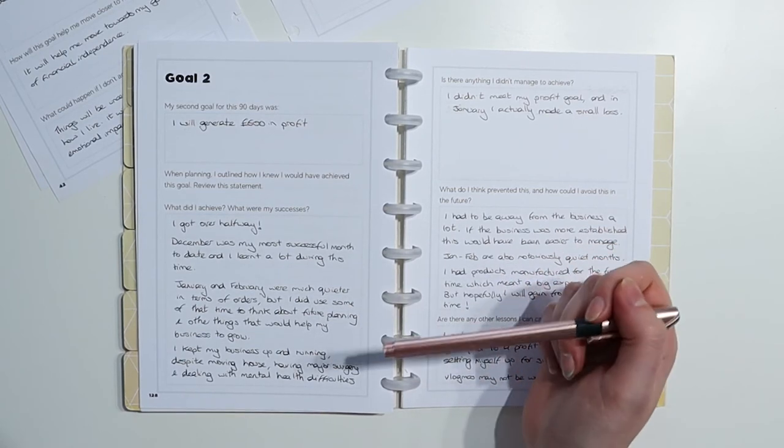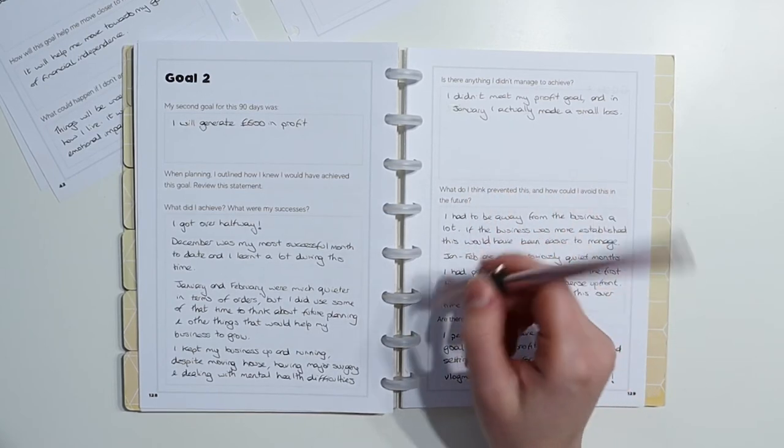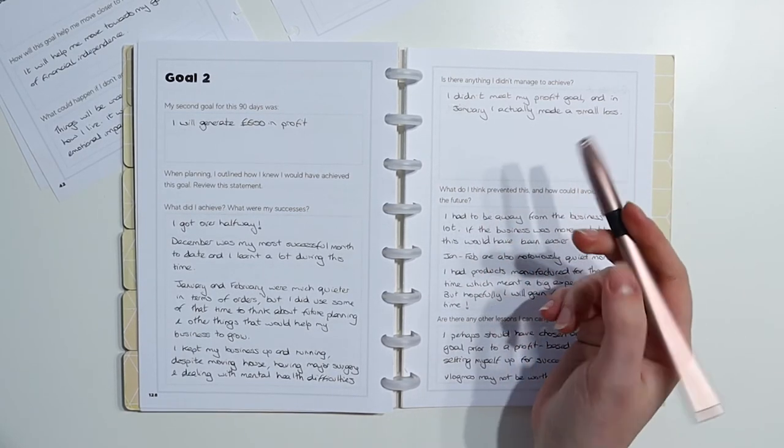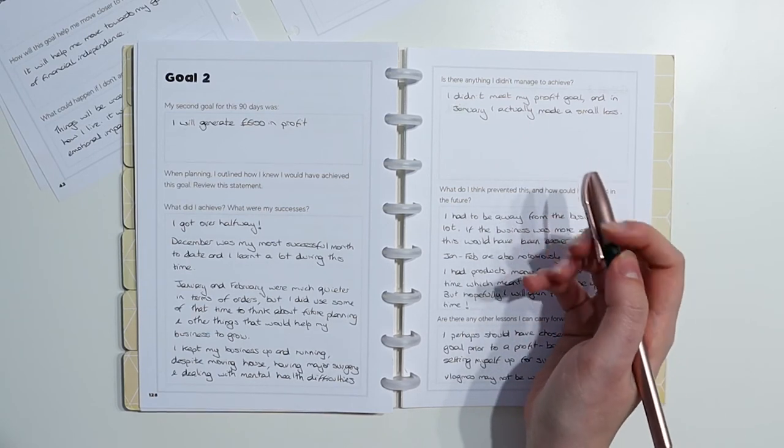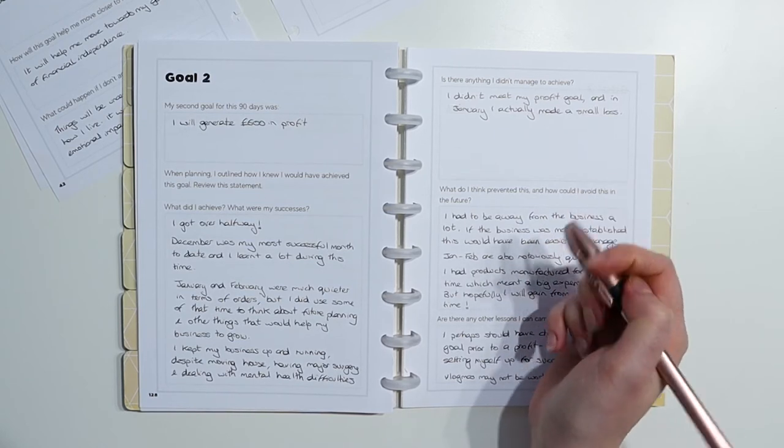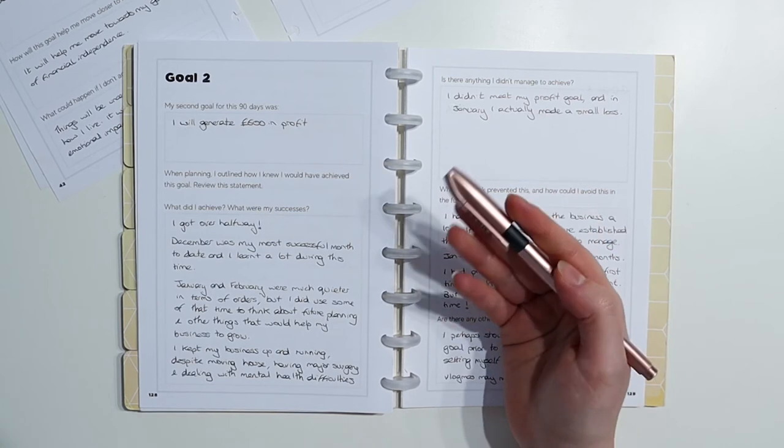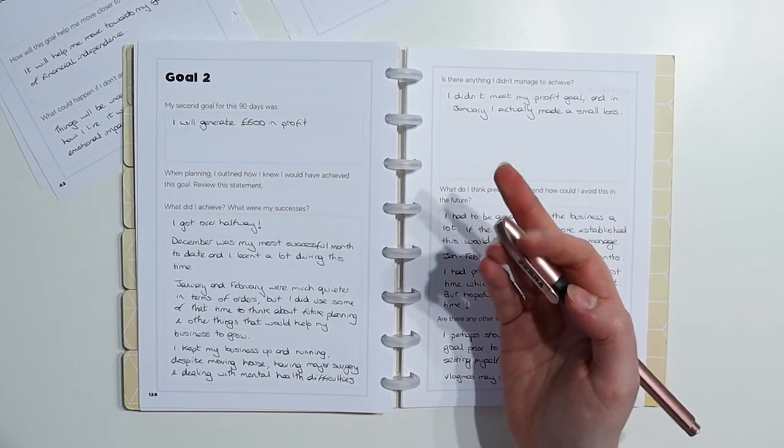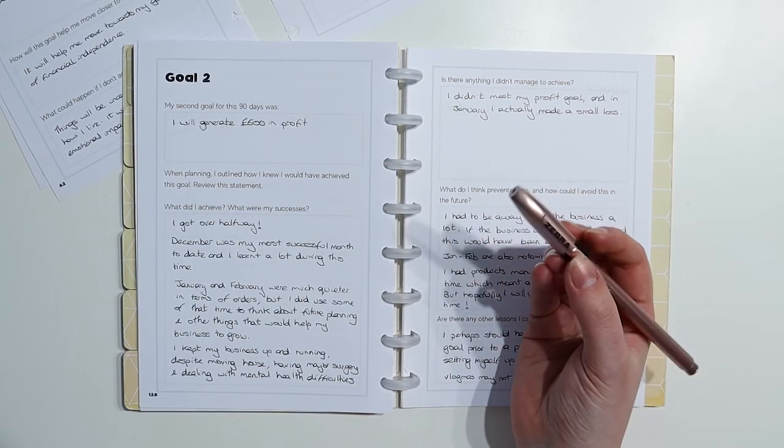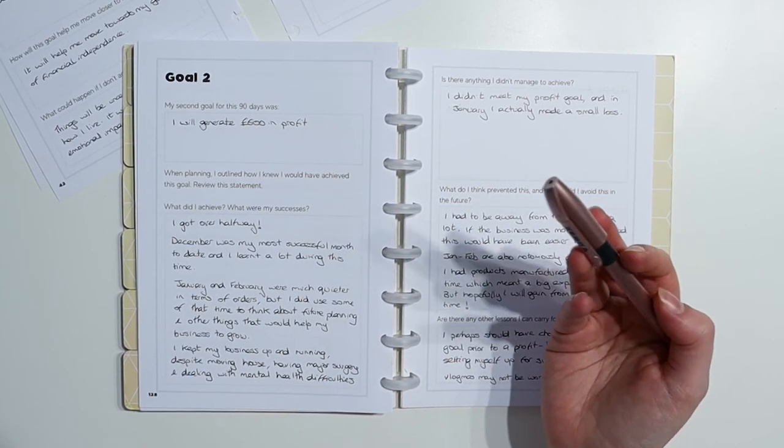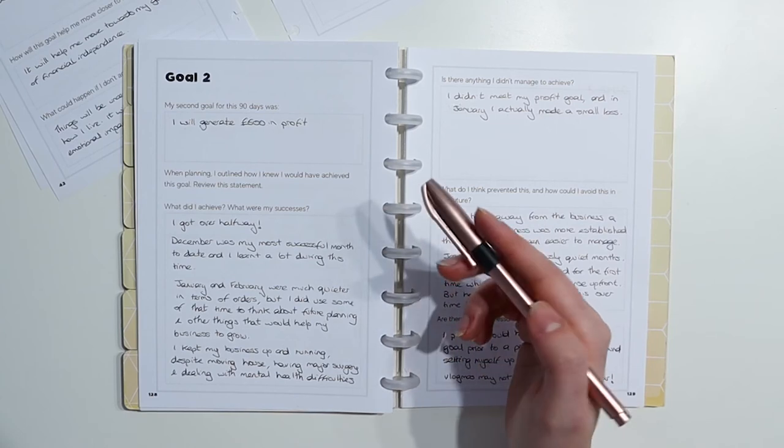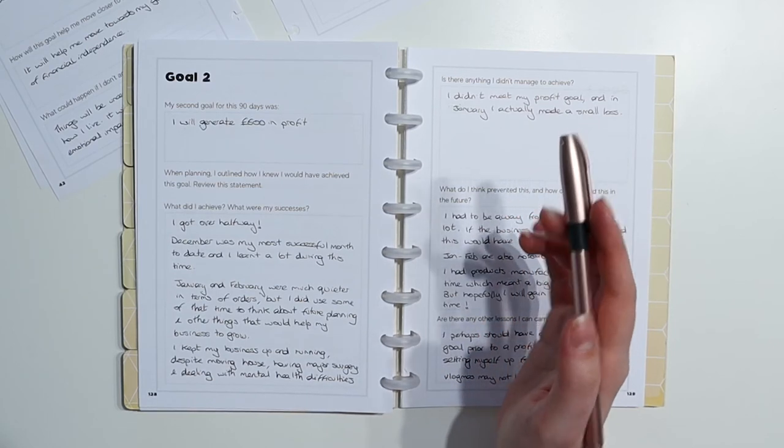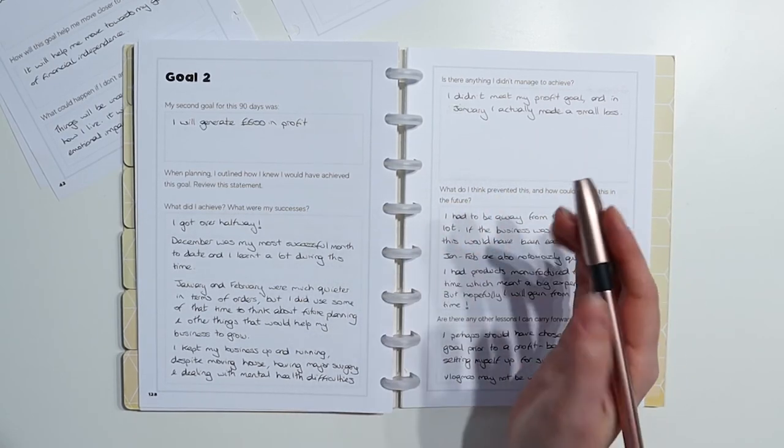January and February were much quieter in terms of orders, but I did use some of that time to think about future planning and other things that would help my business to grow. So, I didn't just sit and wait around for the orders to come in. I thought, utilise this time when you've got it. Also, I kept my business up and running despite moving house, having major surgery, and dealing with mental health difficulties. So, in December, around Christmas, as I think a lot of people with mental health difficulties can relate to, it can be a time where things take a major hit. And, yeah, I really wasn't feeling good end of December going into January. And I had all the stress of these major life events that not only did it take me away from my business, but I also had the emotional impact of dealing with them, the anticipation of them, and then things kept being cancelled and pushed back. And it was a lot to cope with.